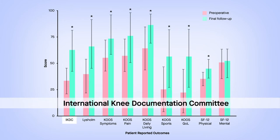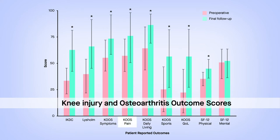These included International Knee Documentation Committee scores, Lysholm scores, short-form 12 scores for physical health, and knee injury and osteoarthritis outcome scores for symptoms, pain, activities of daily living, and sports performance.